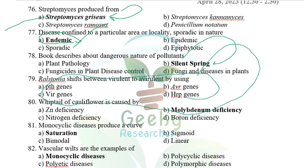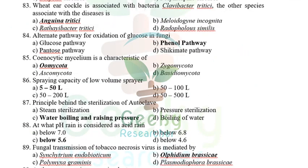Whiptail of cauliflower is caused by molybdenum deficiency. Monocyclic disease produces a saturation curve, whereas polycyclic disease produces a sigmoid (S-shaped) curve. Vascular wilts are examples of monocyclic diseases.